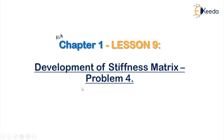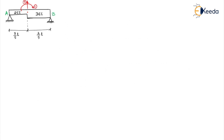So far in the first 3 problems, what we have seen, we had a beam with the same EI value throughout. But in this problem, if you observe, half of the beam is of 2EI and the other half is of the value 3EI. So let us call the midpoint as coordinate C. This coordinate is in between the beam, and at C you have 2 degrees of freedom. One is the moment or rotation given as coordinate 1, and the other is the vertical displacement upward given as coordinate 2. The length of one span is 3/5L and the other is 2/5L.